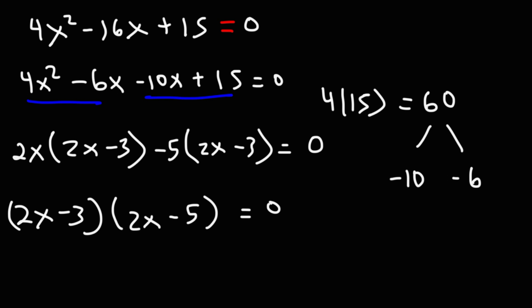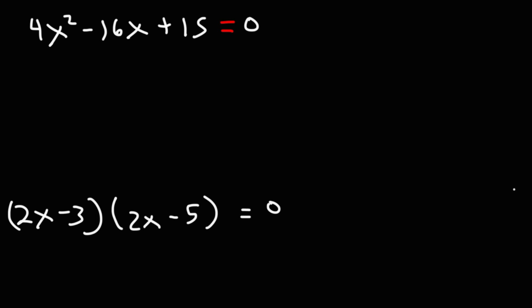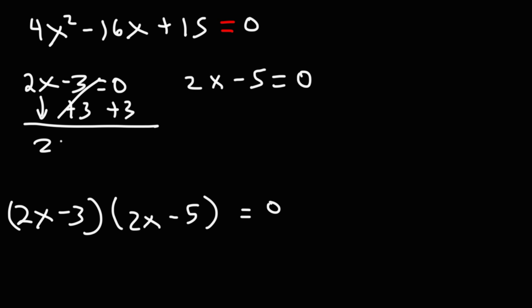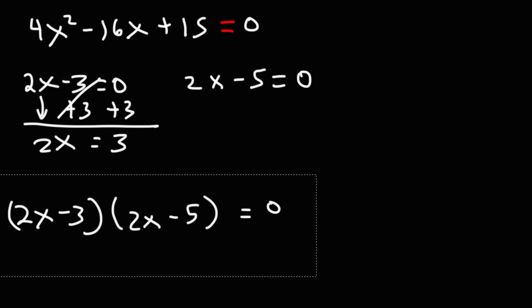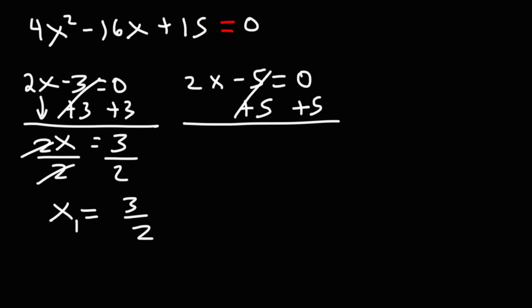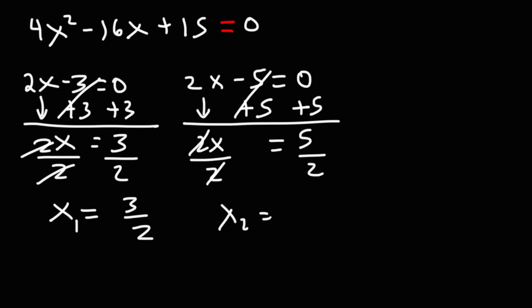Setting each factor equal to zero using the zero product property: for 2x minus 3 equals 0, add 3 to both sides to get 2x equals 3, then divide by 2 — so x1 equals 3 over 2. For 2x minus 5 equals 0, add 5 to both sides to get 2x equals 5, then divide by 2 — so x2 equals 5 over 2.